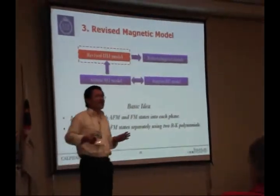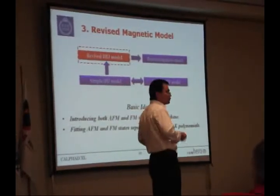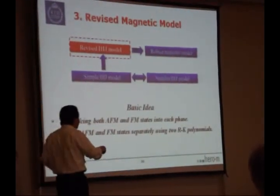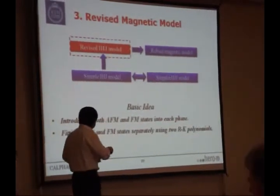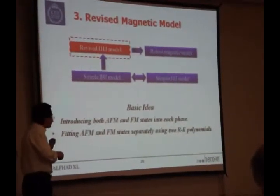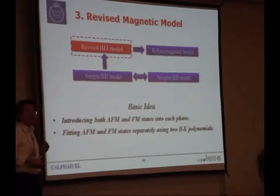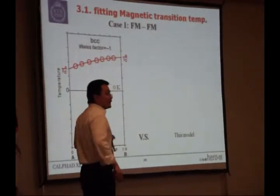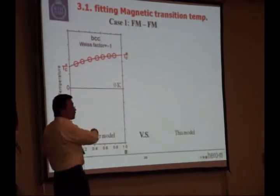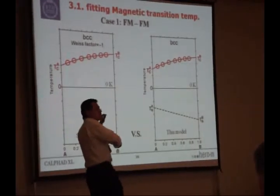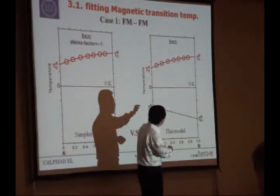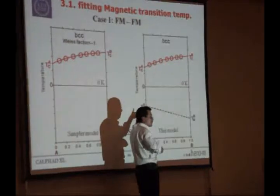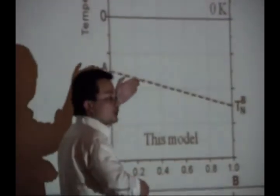The basic idea for this kind of revised magnetic model is really simple, but not too simple. We introduce both antiferromagnetic and ferromagnetic states into each phase. And then we try to describe these two different magnetic states separately using two Redlich-Kister polynomials.